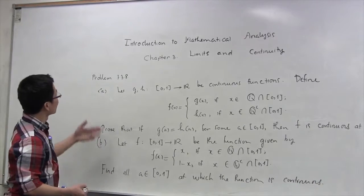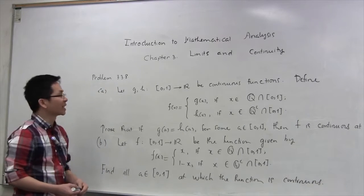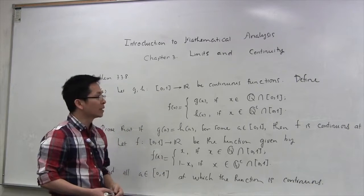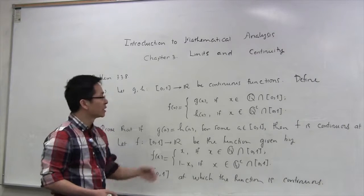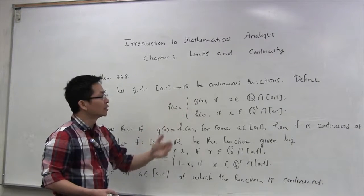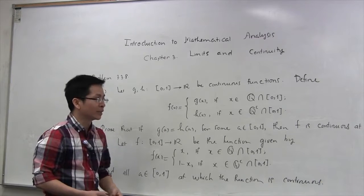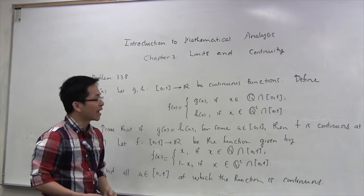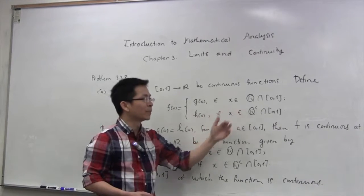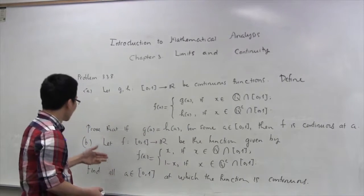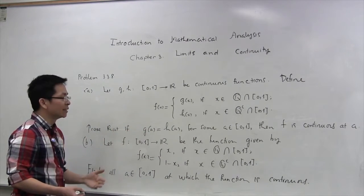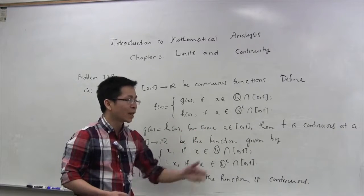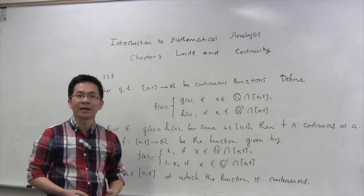In this video we are going to work on problem 3.3.8 from the textbook. Let g and h be continuous functions defined on the interval [0,1], and we define a new function f: f equals g if x is a rational number in [0,1], and f equals h if x is an irrational number in this interval. We have to prove that if g(a) equals h(a) for some a in [0,1], then the function f is continuous at a.